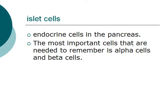The islet cells are a type of endocrine cells found in the pancreas. In this course, the most important cells you need to remember are the alpha cells and the beta cells.